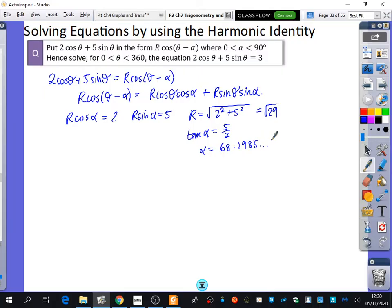I wouldn't round this too heavily here, because I'm going to need to use it when solving equations. So probably what I would say for α is 68.199 degrees. That's probably enough decimal points to be able to keep the degree of accuracy that I'm likely to need in this question.